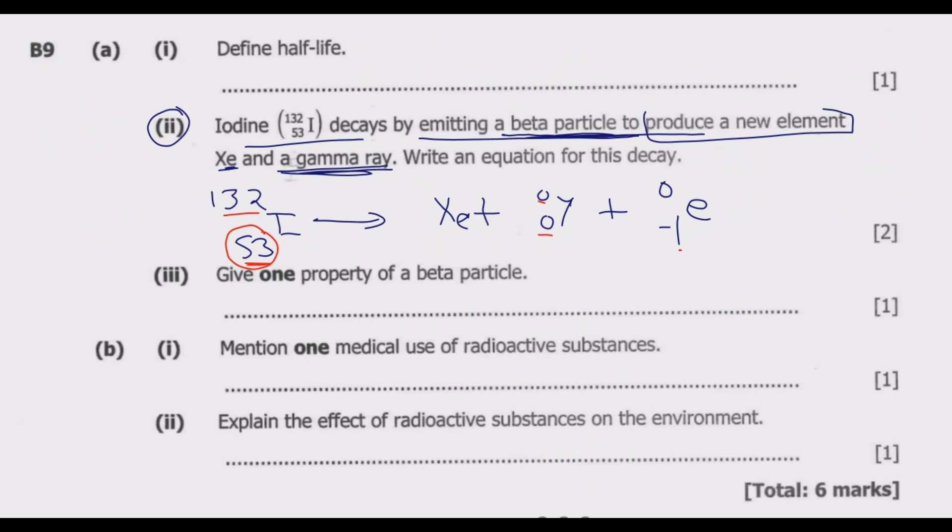Then similarly, we'll do the same for the top part, it will be 132 plus this one plus zero plus zero. So the error is equal to 132. That's the principle that you use. So this will be 54, then this will be 132. Then once you do that, you are good to go. So just make sure that you show this, the 54, then also the gamma ray, which is a gamma particle, then you have the beta.